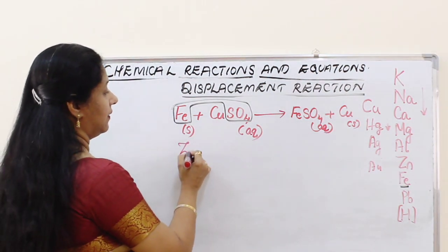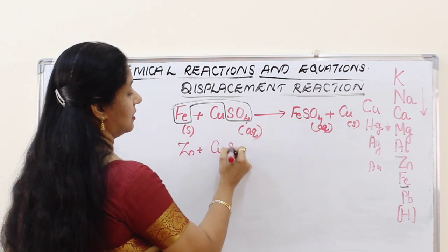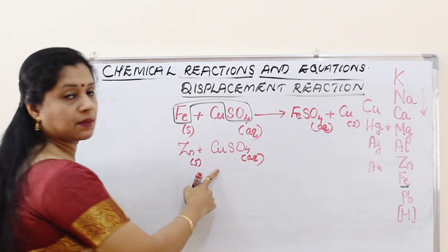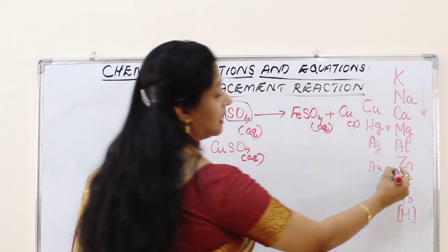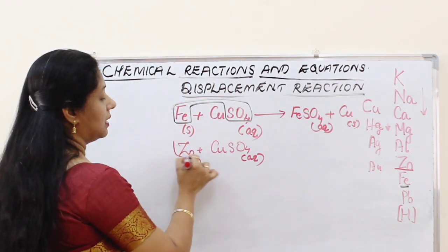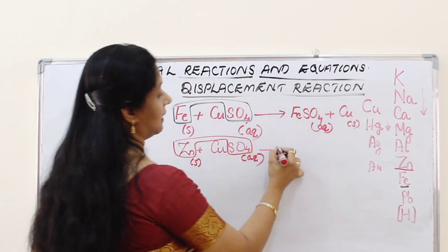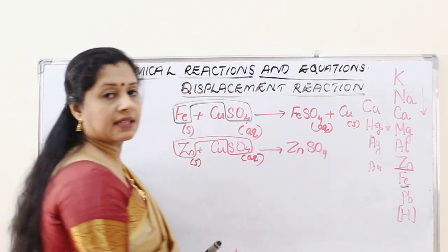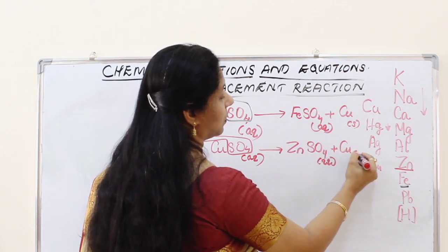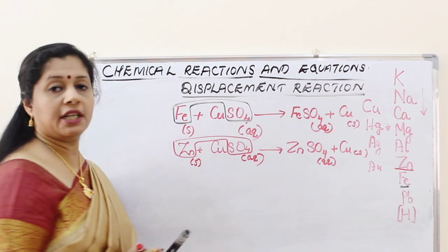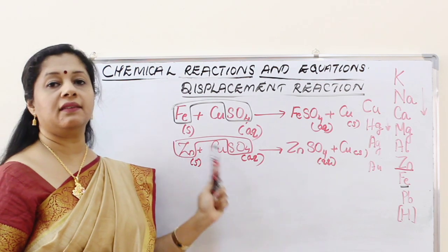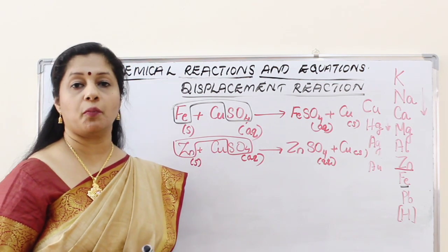Second example: zinc reacts with copper sulphate solution. Zinc is solid and copper sulphate is aqueous and blue. Zinc is higher than copper in the reactivity series, so zinc displaces copper, forming zinc sulphate (colourless) and a reddish-brown copper deposit on the zinc surface. The blue colour of the solution fades to colourless.